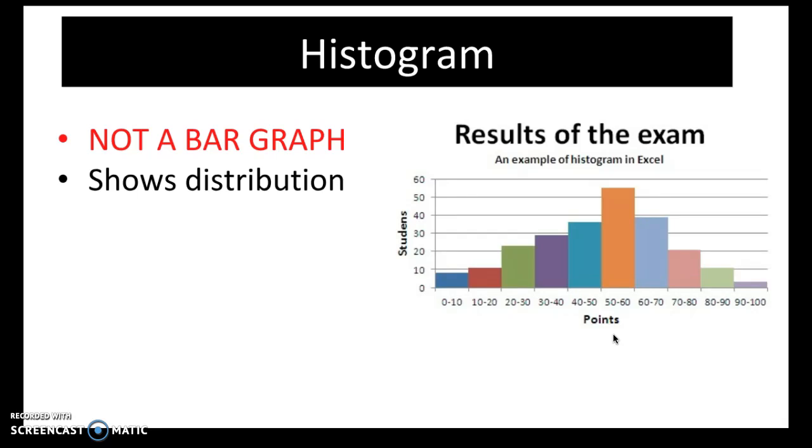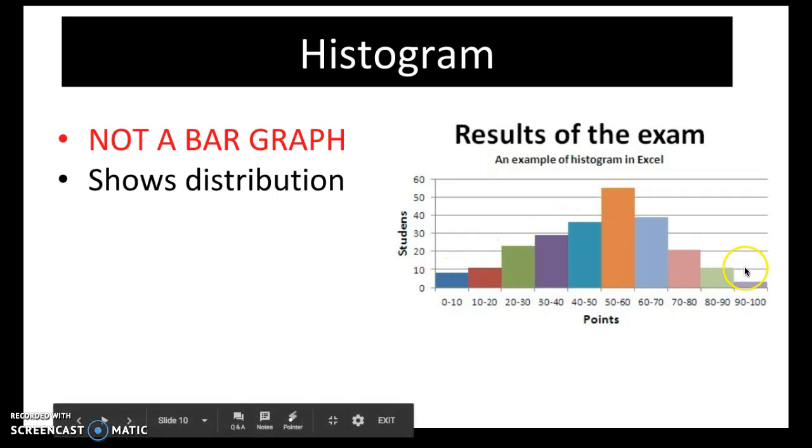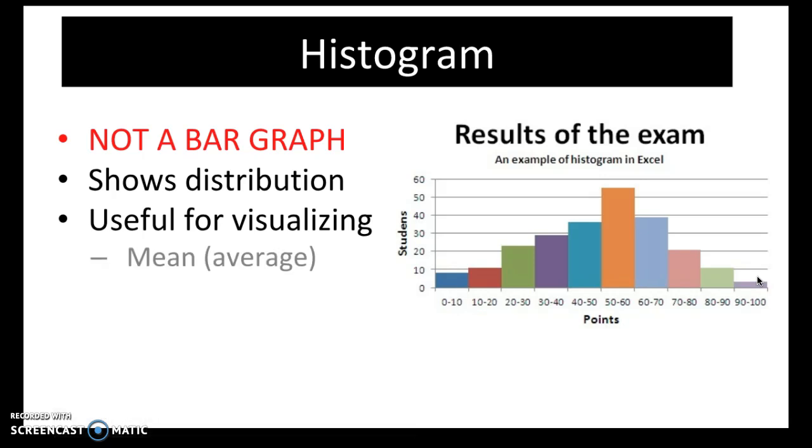So what does a histogram show? It shows distribution. And the best example of that is point distribution on an exam. So a histogram is useful when you want to find the mean, which will be like the average.